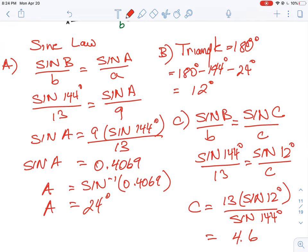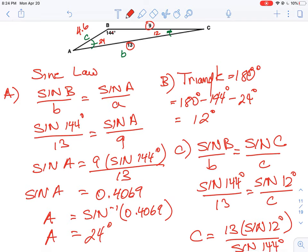All right, okay. So that's how that question works through. It's an application of the sine law twice, and we have to use a triangle property in order to figure out one of the missing angles.